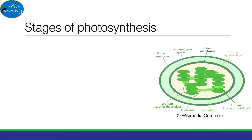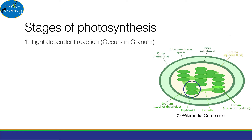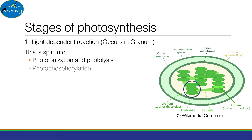There are two stages to photosynthesis. First is the light-dependent reaction, which occurs in the granum, and this is divided into photoionization and photolysis, followed by photophosphorylation and the production of reduced NADP, also known as NADPH.